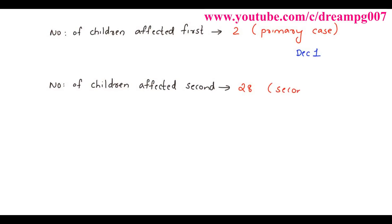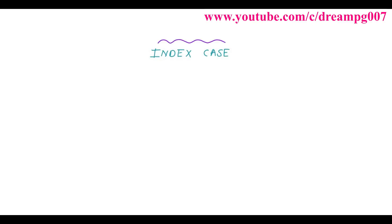What is serial interval? Serial interval is the time gap between primary and secondary cases. Here it is 3 days. What is an index case? The case first noticed by the investigator is called the index case.